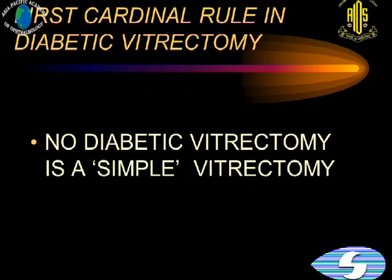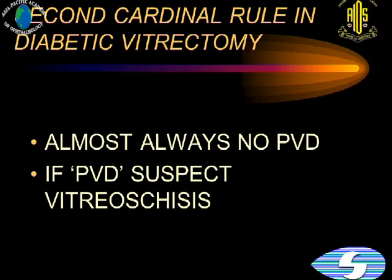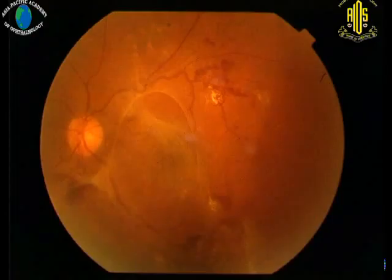The important first principle to remember is: do not think any diabetic vitrectomy is a simple vitrectomy, even if you just see vitreous hemorrhage which is fairly mobile on the ultrasound. There is almost always never a posterior vitreous detachment. And if it looks like an apparent PVD, always suspect vitreous schisis.